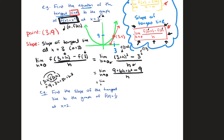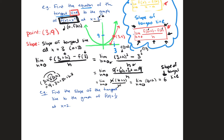The 9's cancel, and both remaining terms have an h, so we factor: h(6+h) over h. The h's cancel, leaving the limit as h goes to 0 of (6+h), which equals 6. So the slope of the tangent line is 6. We found our point (3, 9) and slope 6, so we can use point-slope form to write the equation.